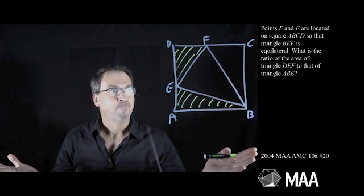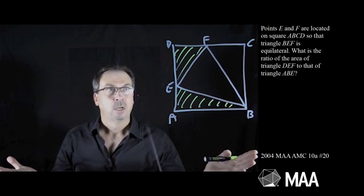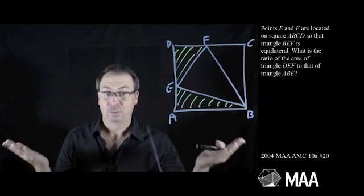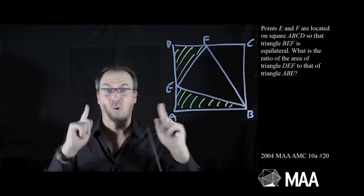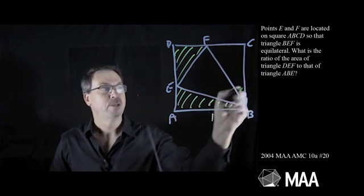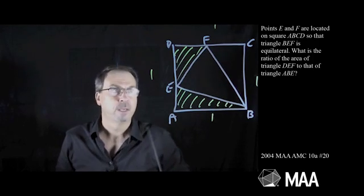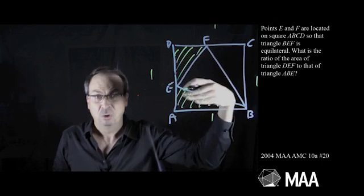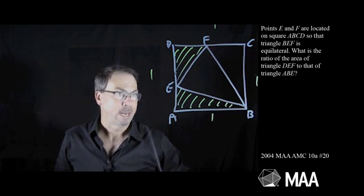I don't know what the side length of the square is, but it could be any number we like. I'm going to choose one. If it turns out to be five feet, I'll call that one unit. If it turns out to be ten meters, I'll call that one unit. So let's just say it's one unit wide. Because in the ratio of areas, the actual nature of the units themselves don't matter.